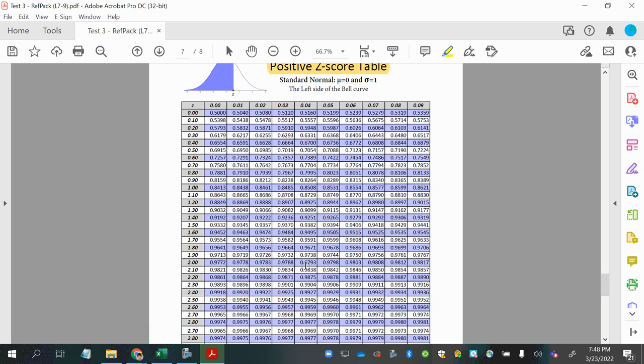So looking up 0.9741 in the body of the table, I don't find it, but I find two values that it's close to. And that would line up with positive 1.94 or positive 1.95, or rather in between those two. So now I have two answers that are basically on either side of the answer I'm looking for. So if I find the middle between these two answers, 1.94 and 1.95, I'll get 1.945.